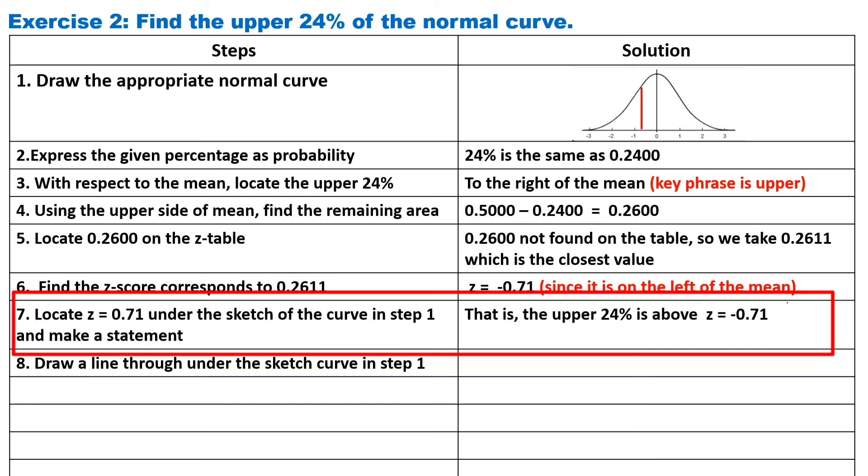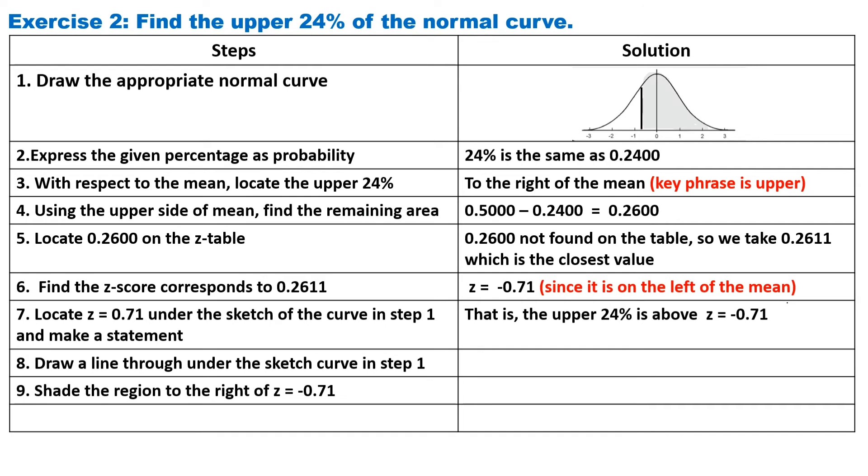Step seven, locate Z equals negative 0.71 under the normal curve in step one and make a statement. That is, the upper 24% is above Z equals negative 0.71. Step eight, draw a line under the sketch curve in step one, then shade the region to the right of Z equals negative 0.71.